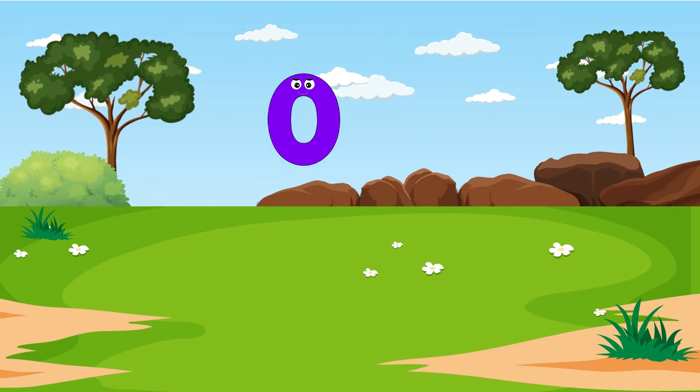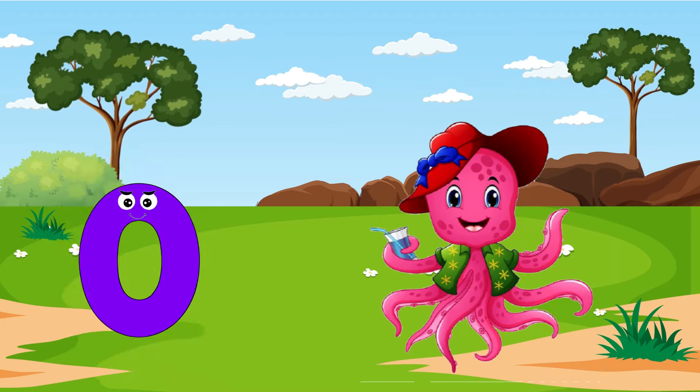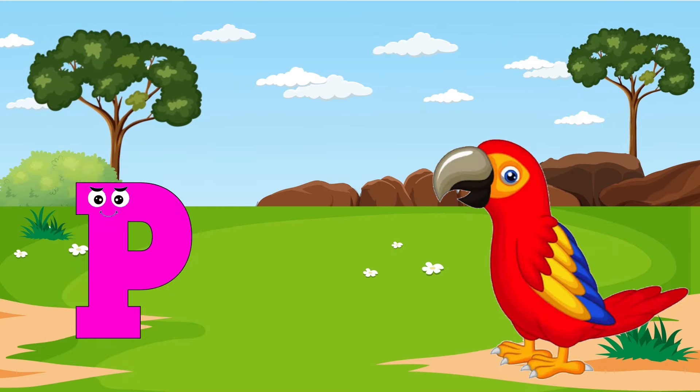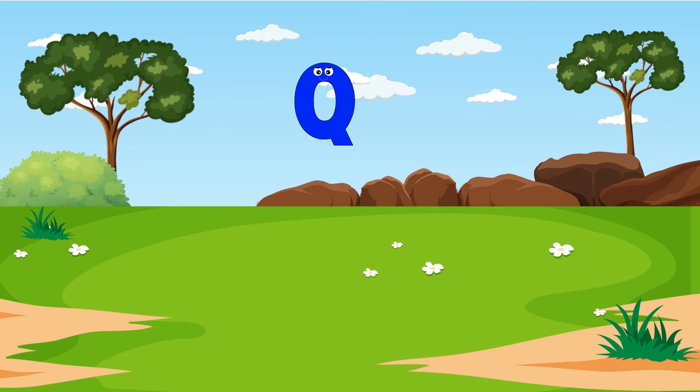Negro. O is for Octopus, O, O Octopus. P is for Parrot, P, P.